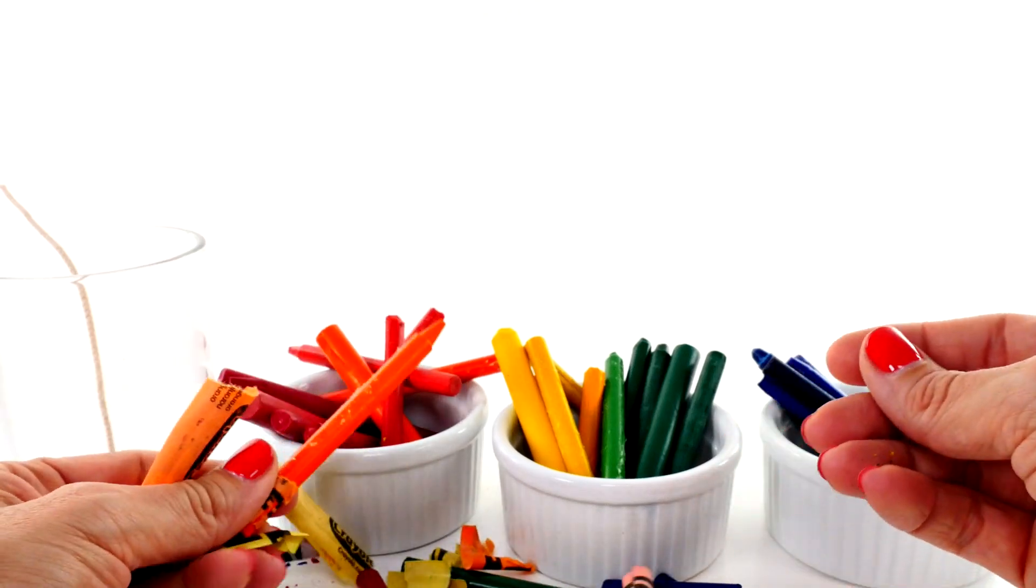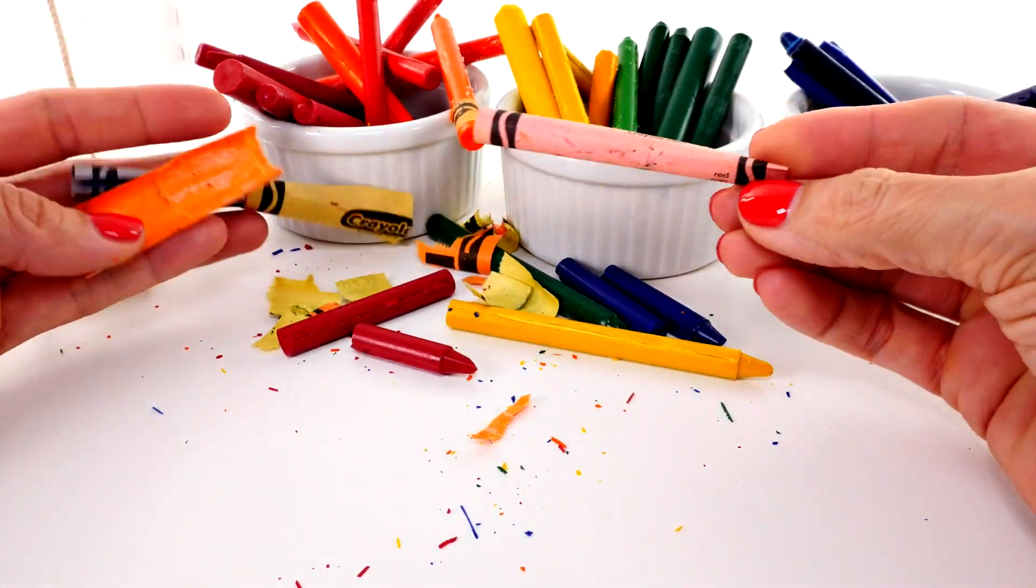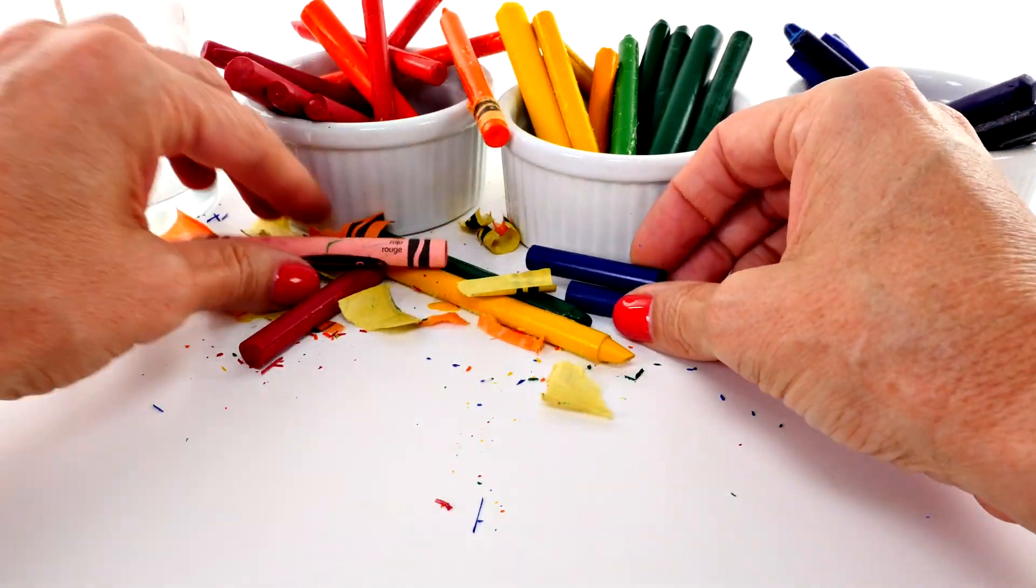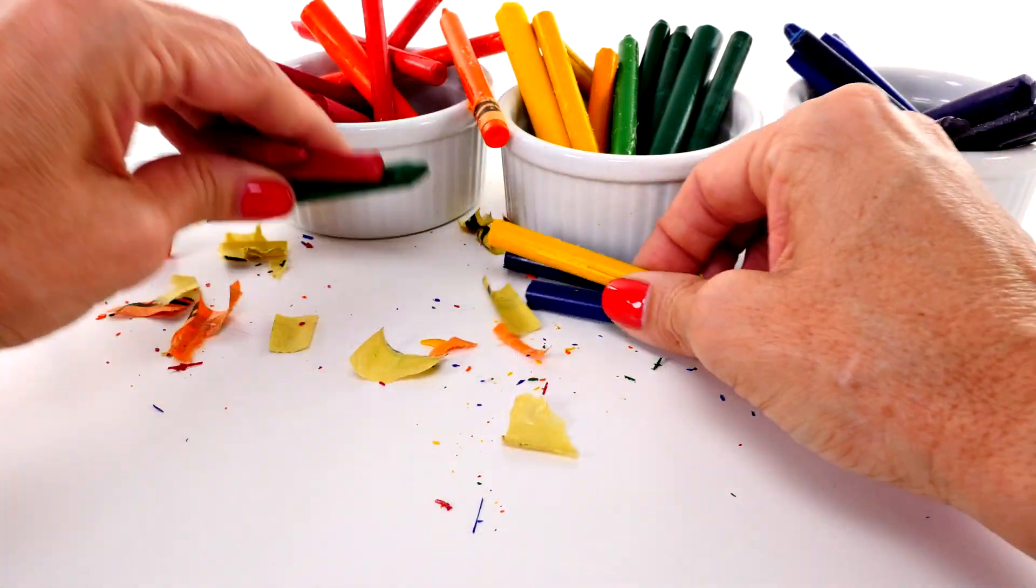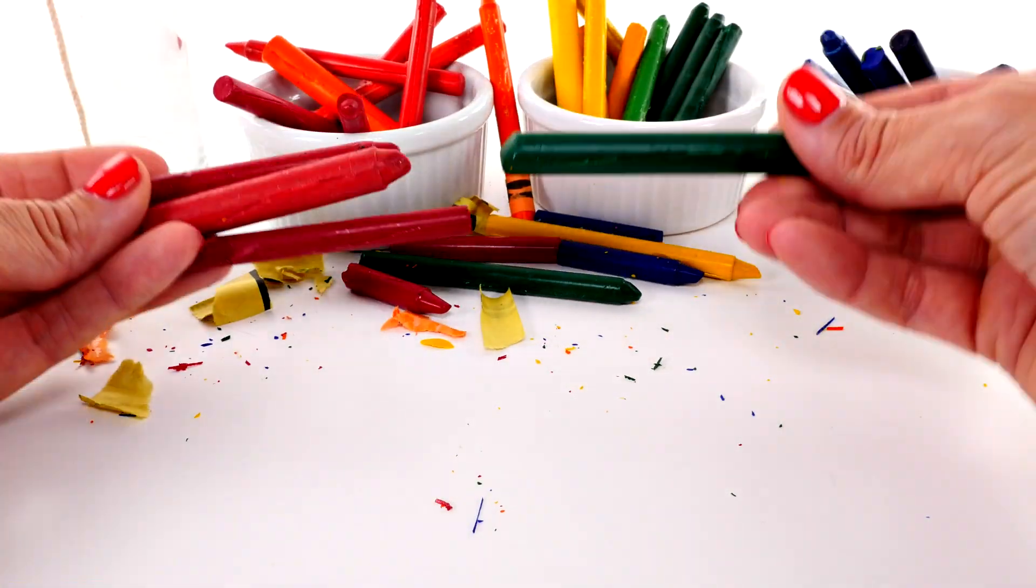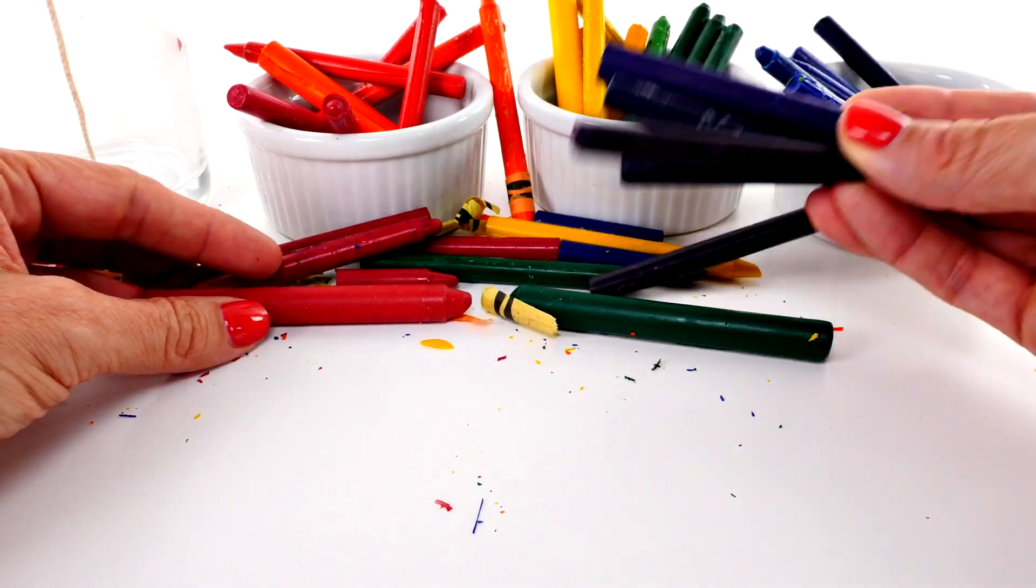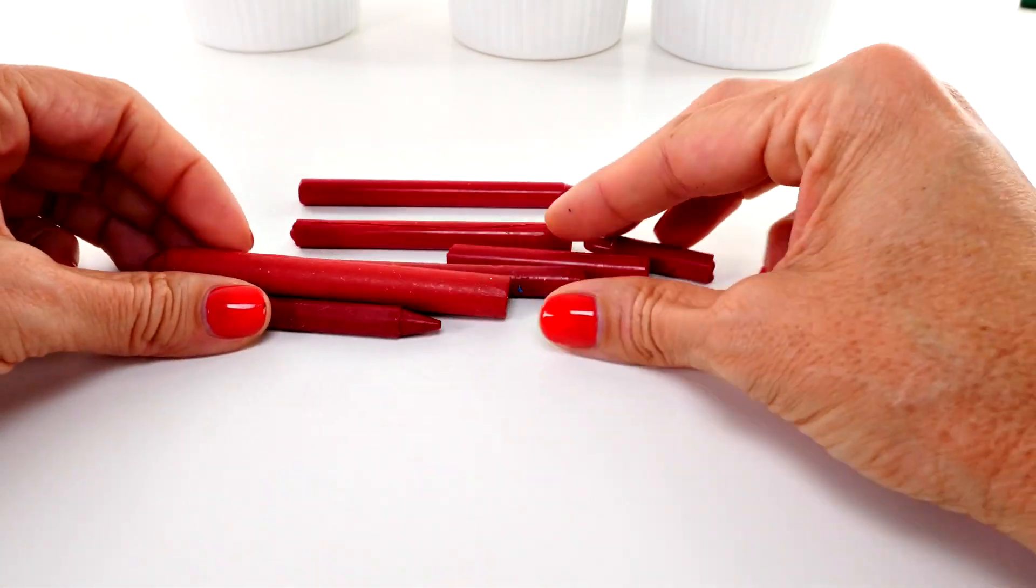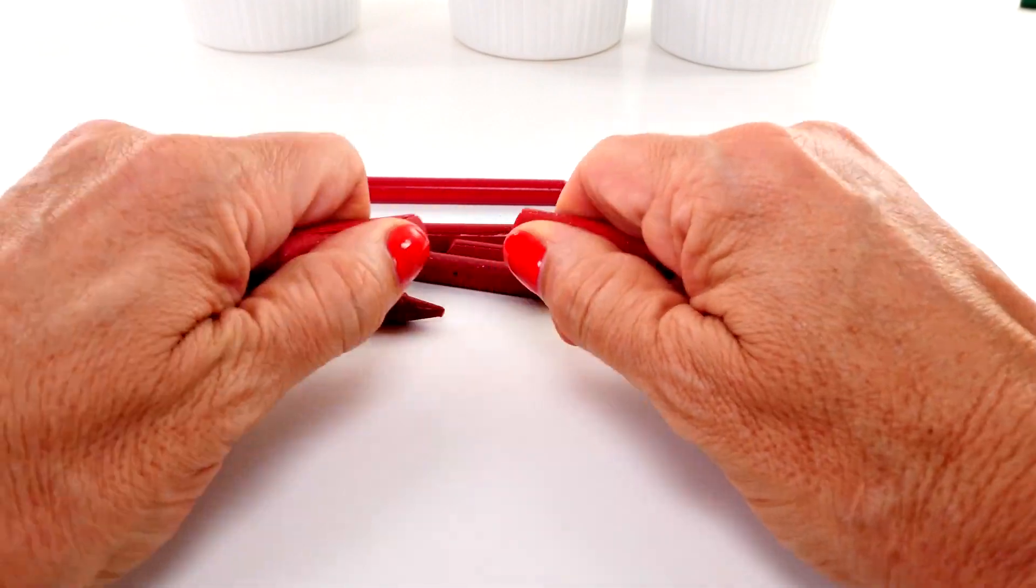Okay, I think we're ready. Peeling the paper off the crayons is really messy, so you want to put down some kind of a paper towel. I should have done that. I did that yesterday when I was peeling the wrapper off of all of these. Messy job number two: breaking the crayons into little pieces.